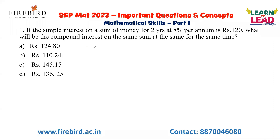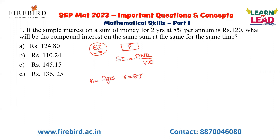This is a concept based on simple interest. We always calculate simple interest based on the investment made, which we take as P. The formula is SI = PNR/100. But instead of using this formula directly, we need to apply some basic logic. N = 2 years and R = 8% per annum, meaning we pay 8% extra per year. For two years, the total rate of interest will be 16%. This 16% is the simple interest.